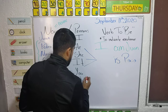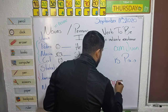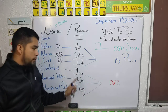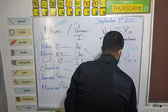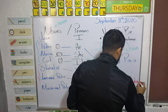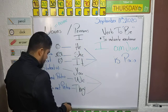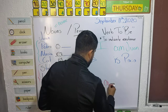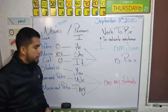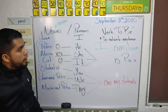Then we have 'you', 'we', and 'they' — these use 'are'. You are, we are, they are. For example: you are my students. So 'are' is used for you, we, and they.